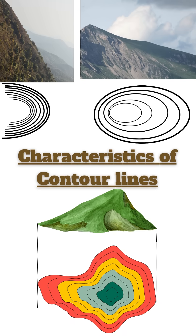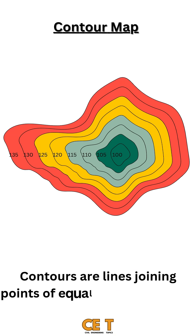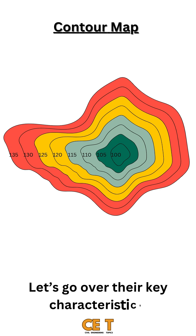Characteristics of contour lines. Contours are lines joining points of equal elevation on the ground. Let's go over their key characteristics.